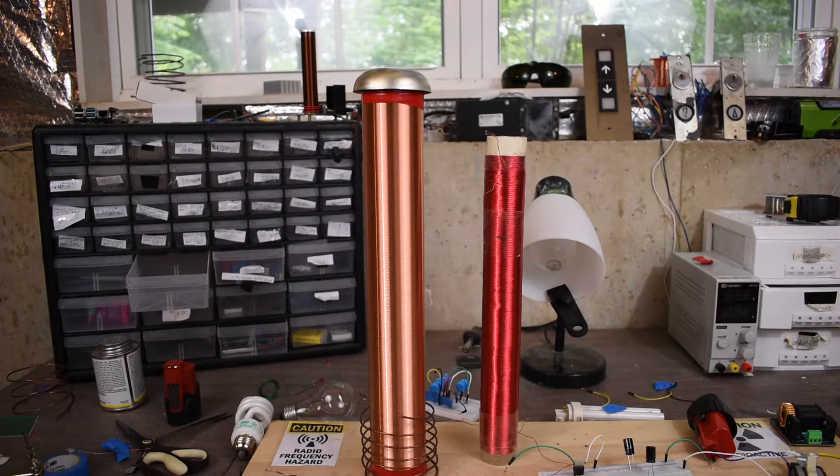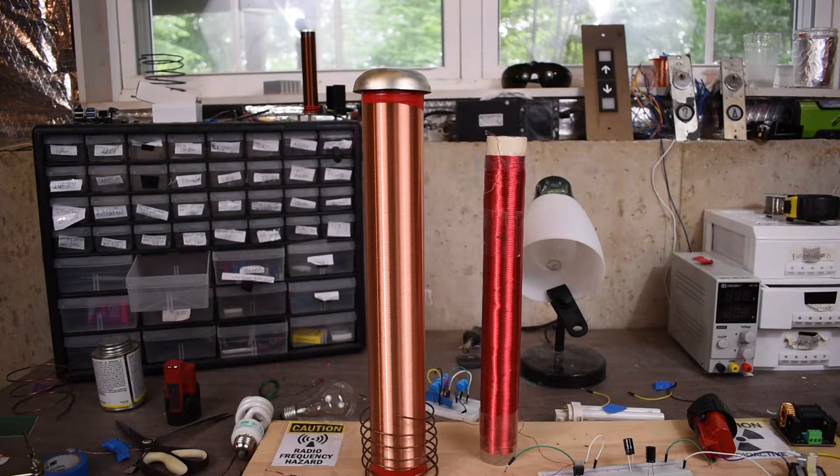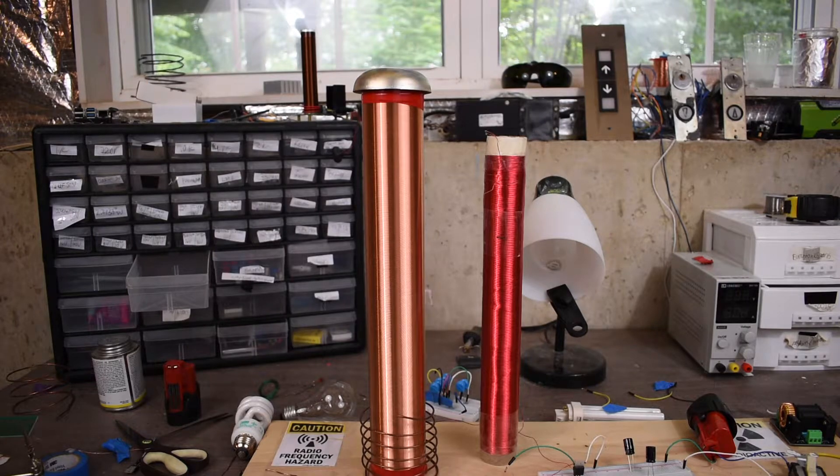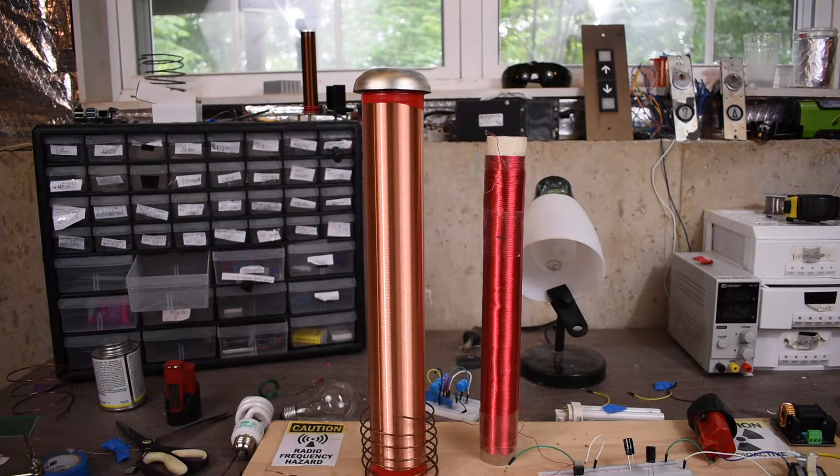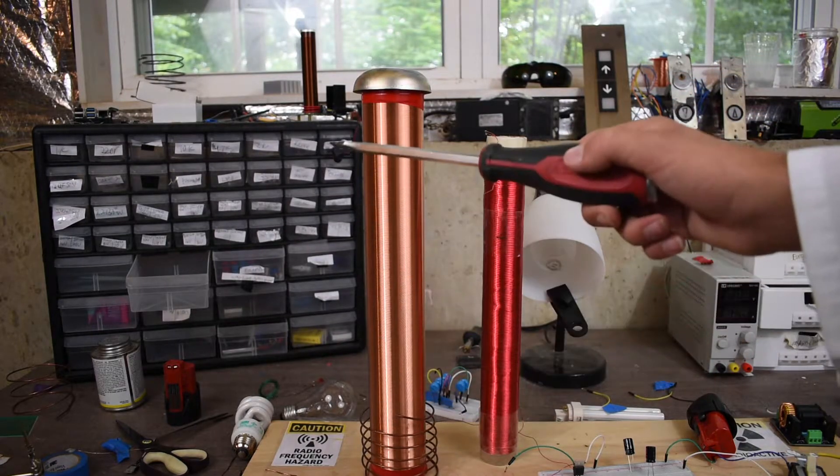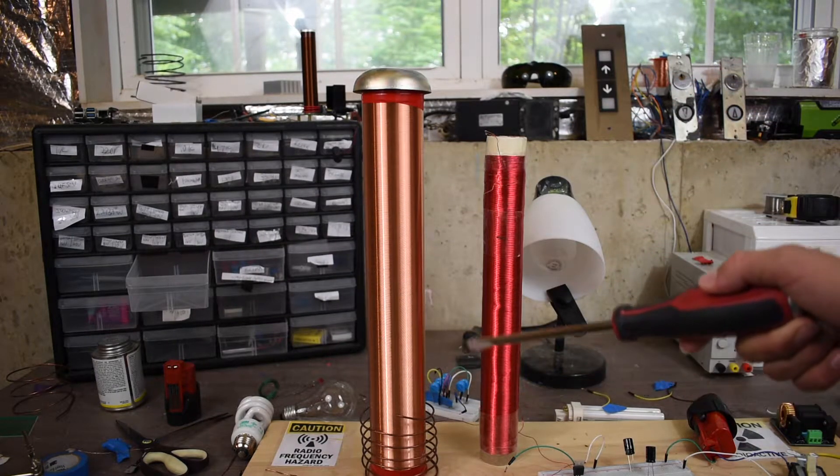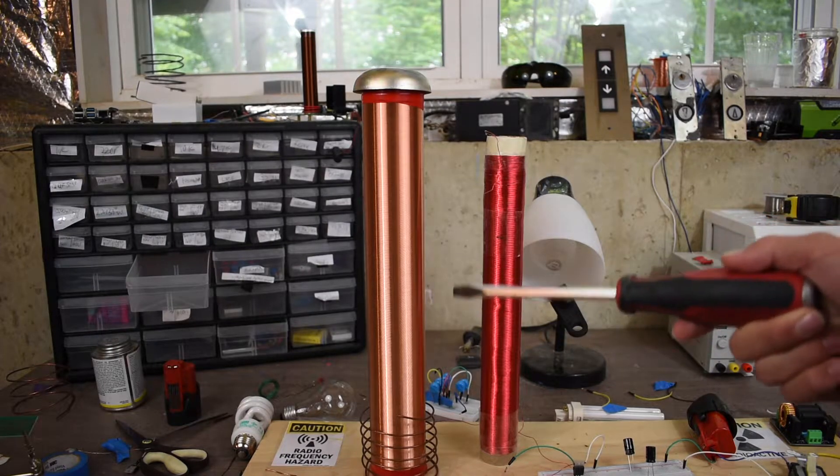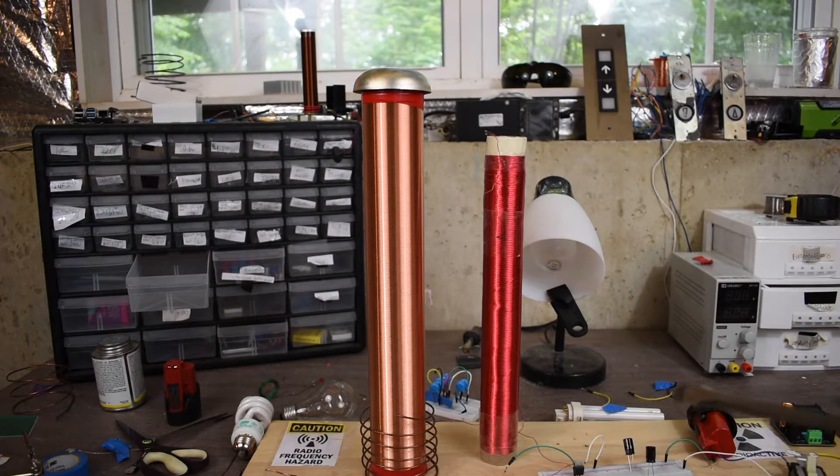And then if you want a Tesla coil of any kind, you're also going to need a primary coil. Now primary coils can be many different shapes and many different sizes. Typically with Slayer Exciters, they're usually wound in a cylinder shape towards the bottom of the Tesla coil. And I believe I have around six turns of primary on my Tesla coil.